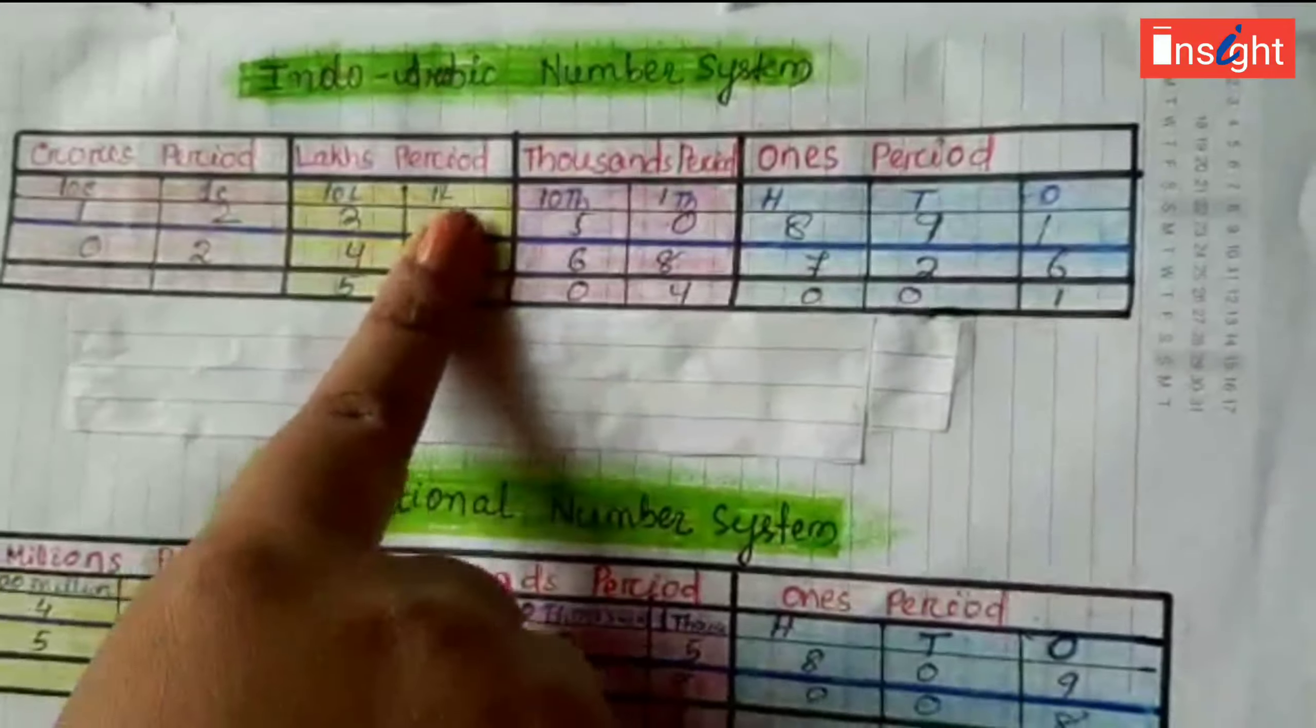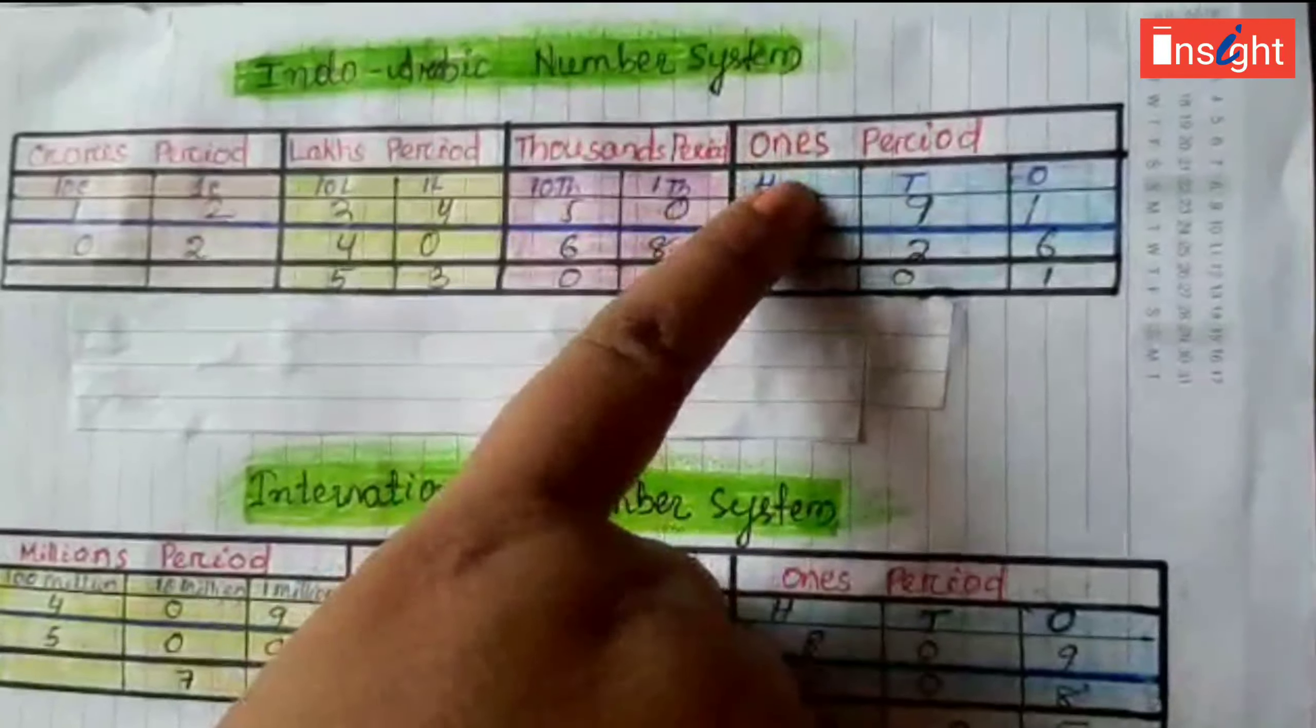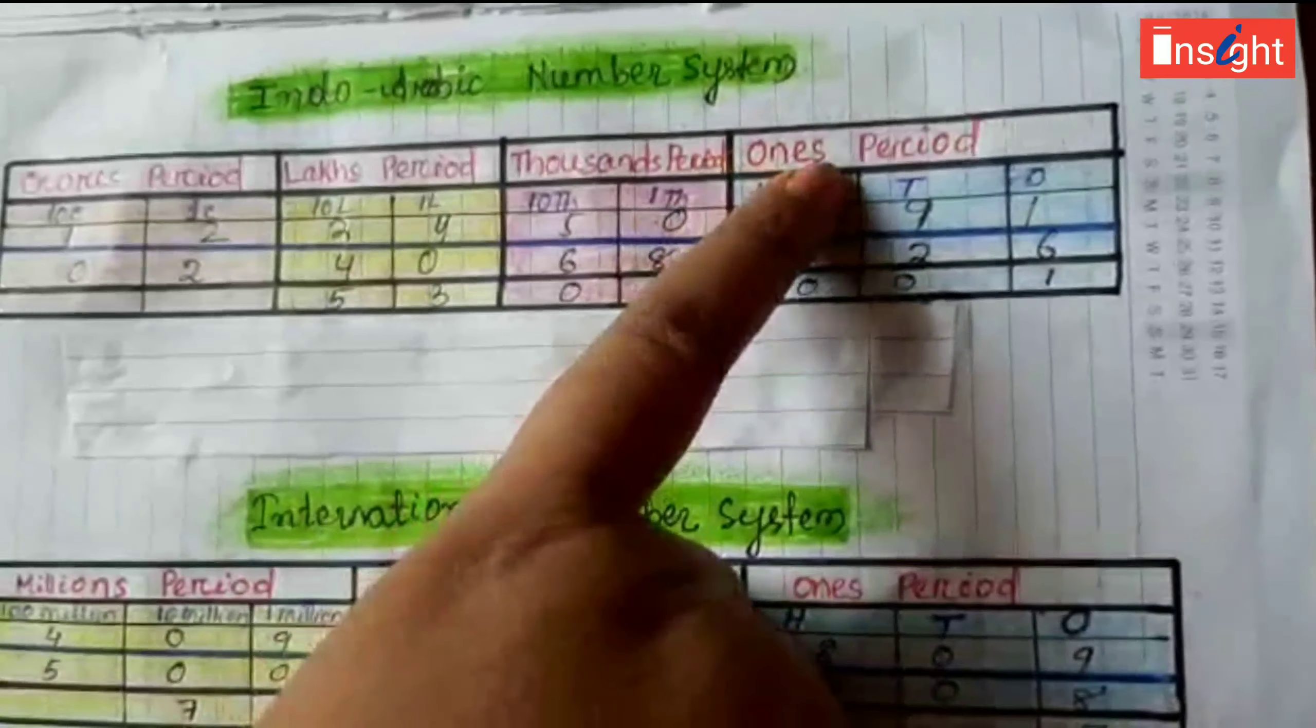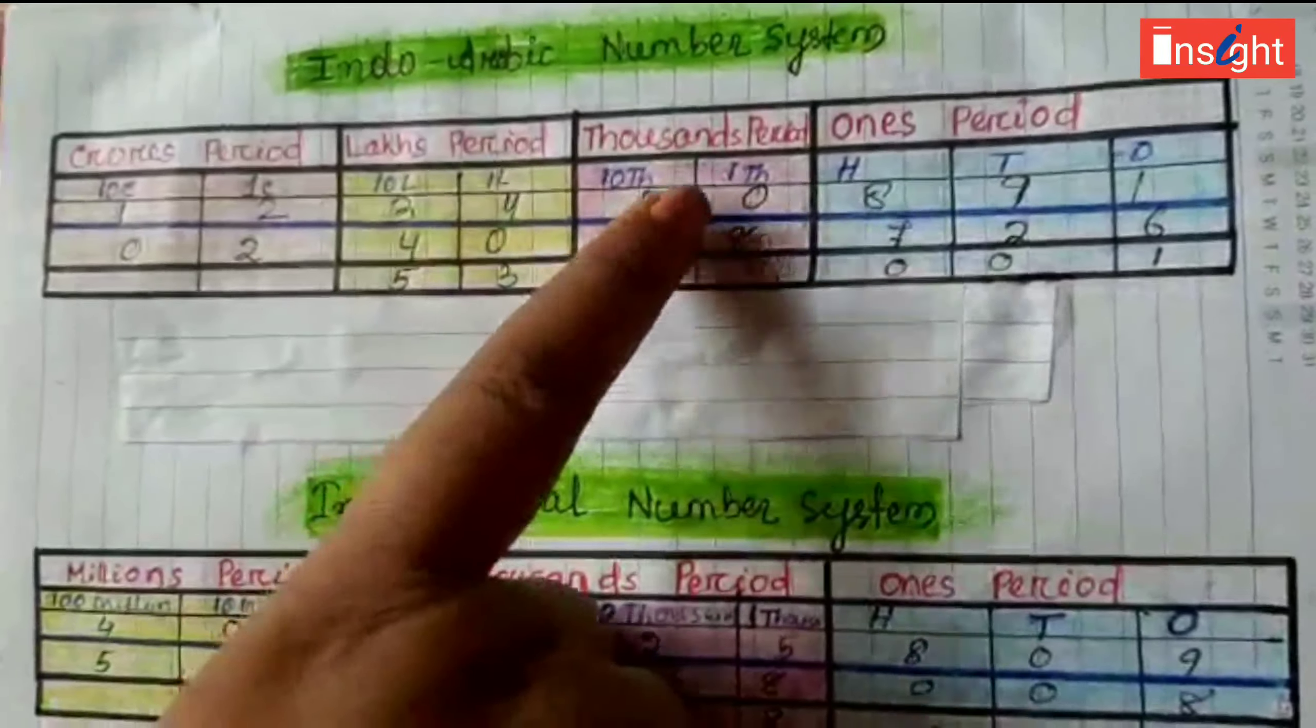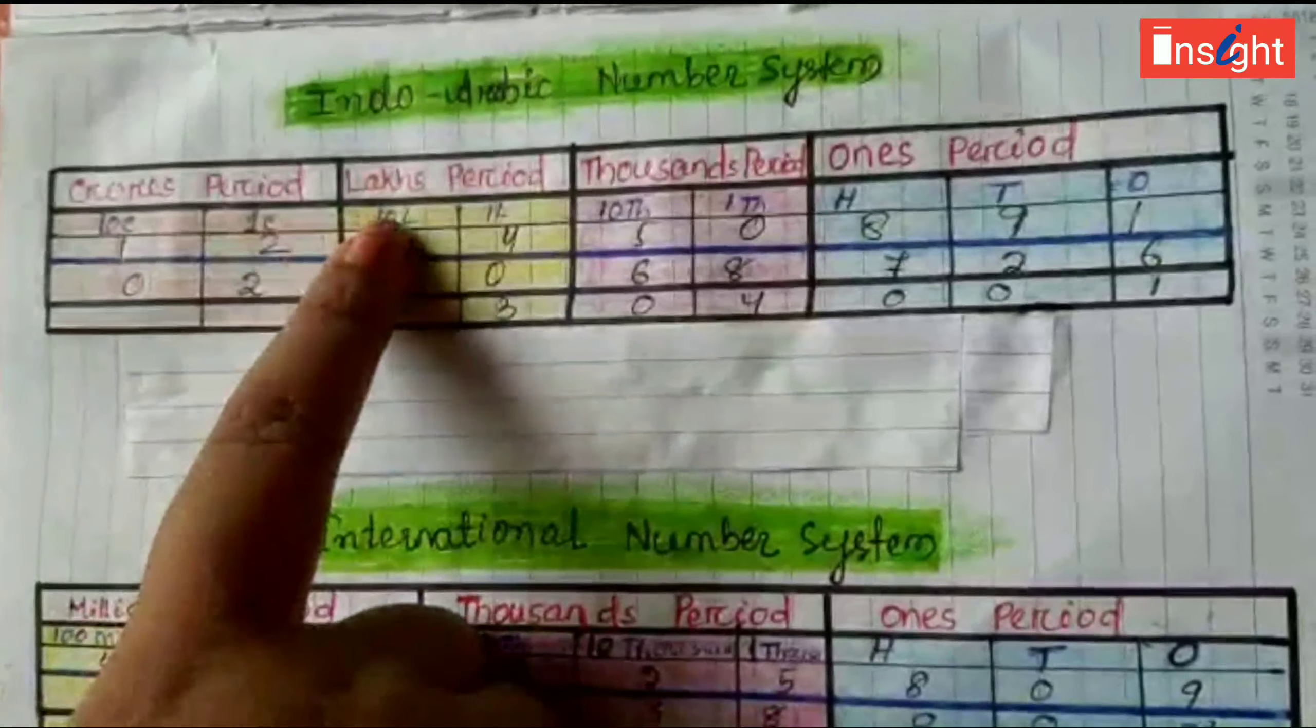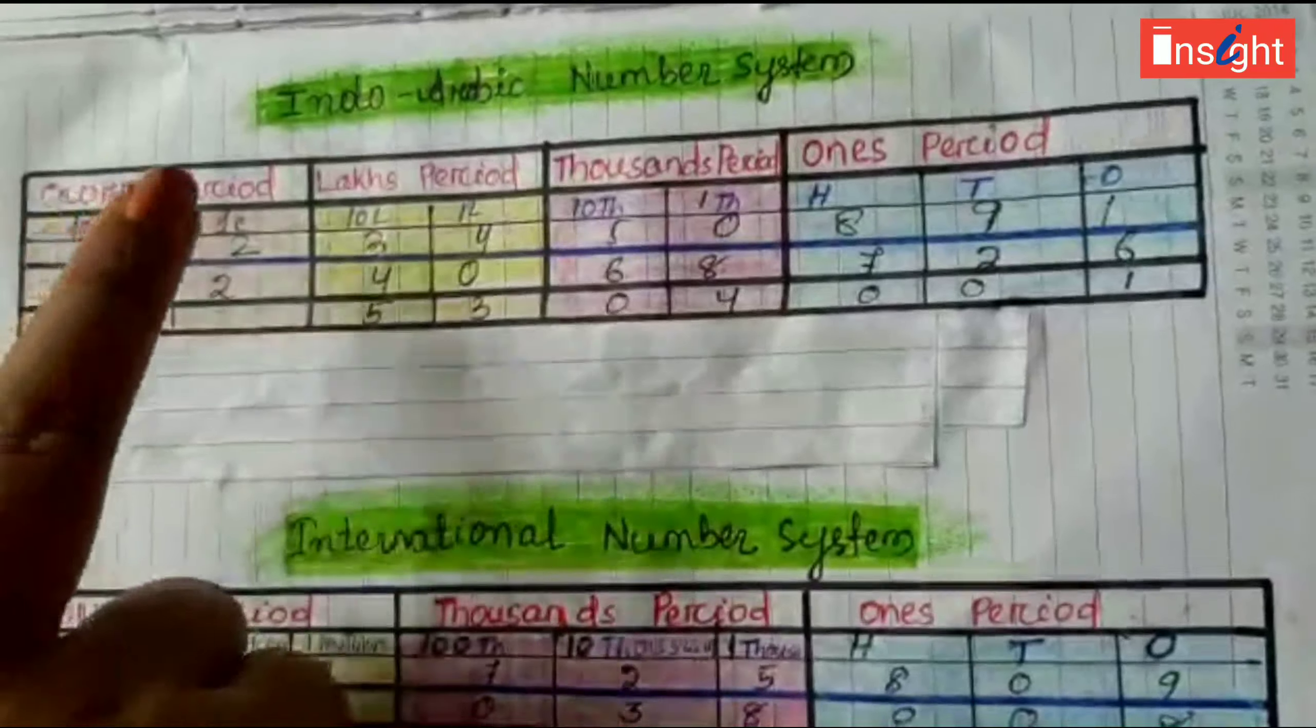Indo-Arabic number system: one category, the last one, once period. It is divided into three subcategories. Once period is divided into hundred, tens and ones. Thousand period is divided into ten thousand and one thousand. Lakhs period is divided into ten lakhs and one lakhs. Crores period is divided into ten crores and one crores.